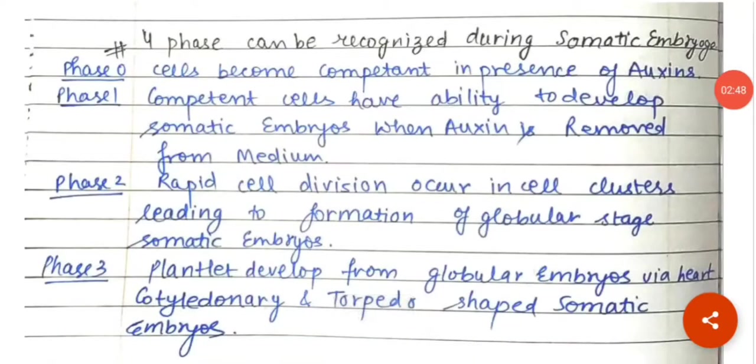There are four phases that can be recognized during somatic embryogenesis. Phase 0: cells become competent in the presence of auxin. Phase 1: competent cells have the ability to develop somatic embryos when auxin is removed from the medium. Phase 2: rapid cell division occurs in cell clusters leading to the formation of globular stage somatic embryos.